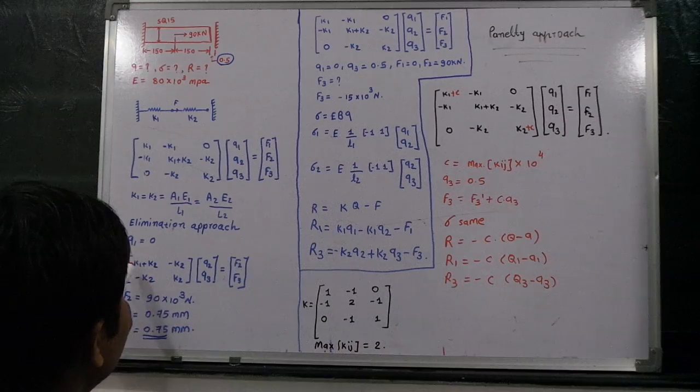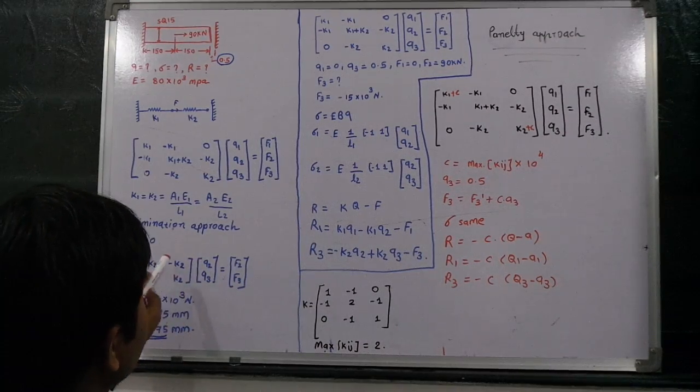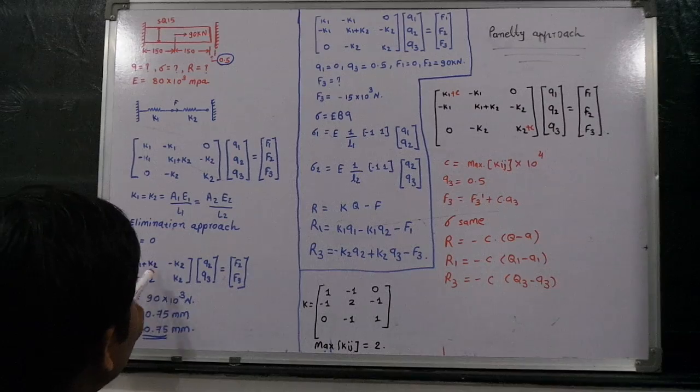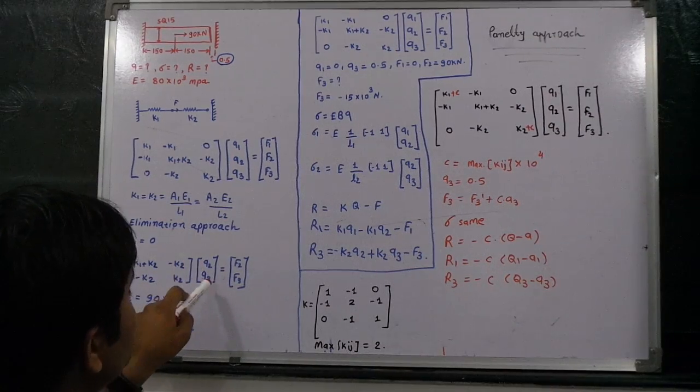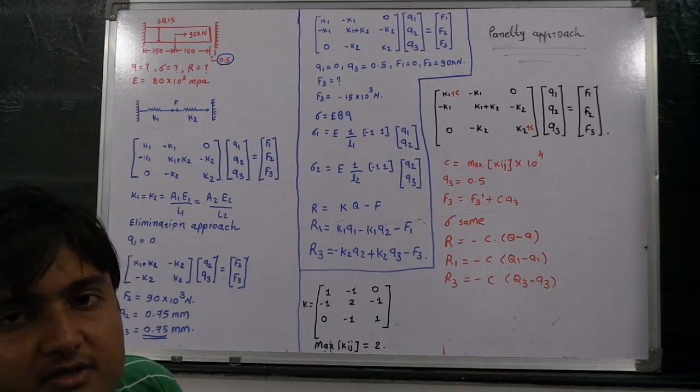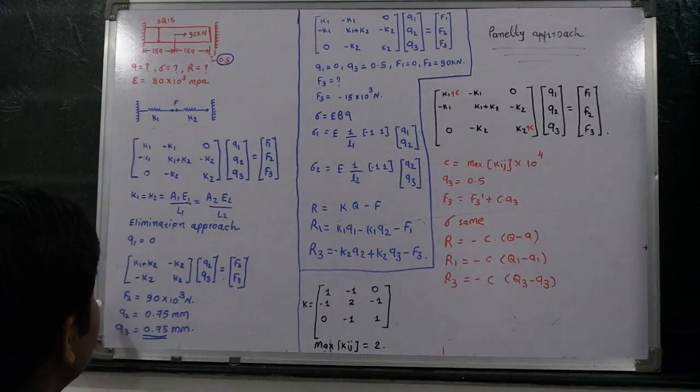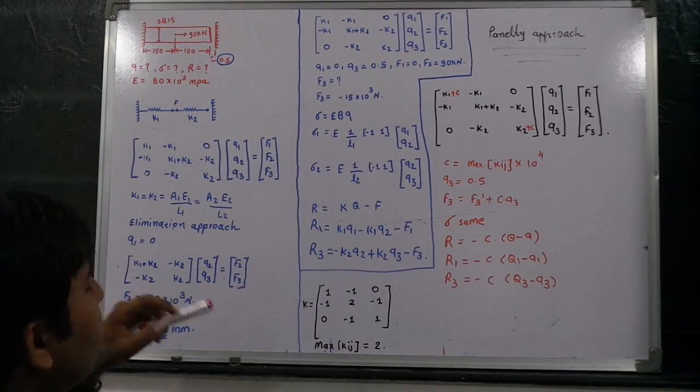K1 and K2 values are known here, F2 and F3 values are known. We have two equations, two unknowns, we are going to find out the value of Q2 and Q3, which is 0.75 and 0.75 mm.